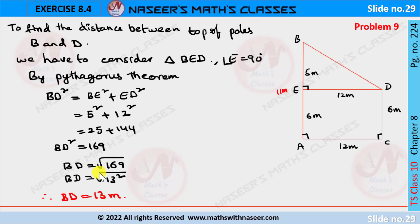We require BD value. Then we can write BD equals square root of 169. 169 is written as 13 squared under the root. We can cancel root and square. Then we get BD equals 13 meters.